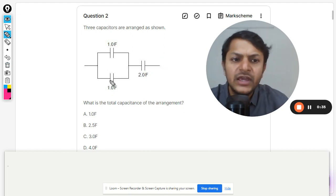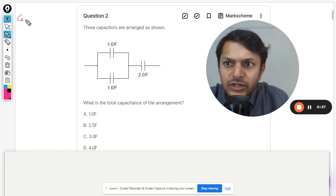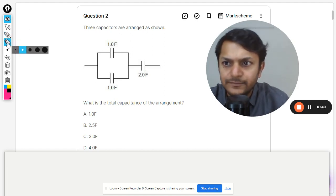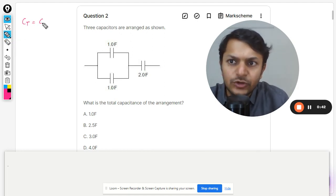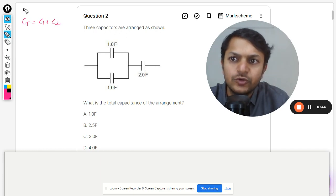In parallel, what we do is c_equivalent, or you can call it c_total, will be equal to c1 plus c2 in parallel combination. So this plus this, that will become two.